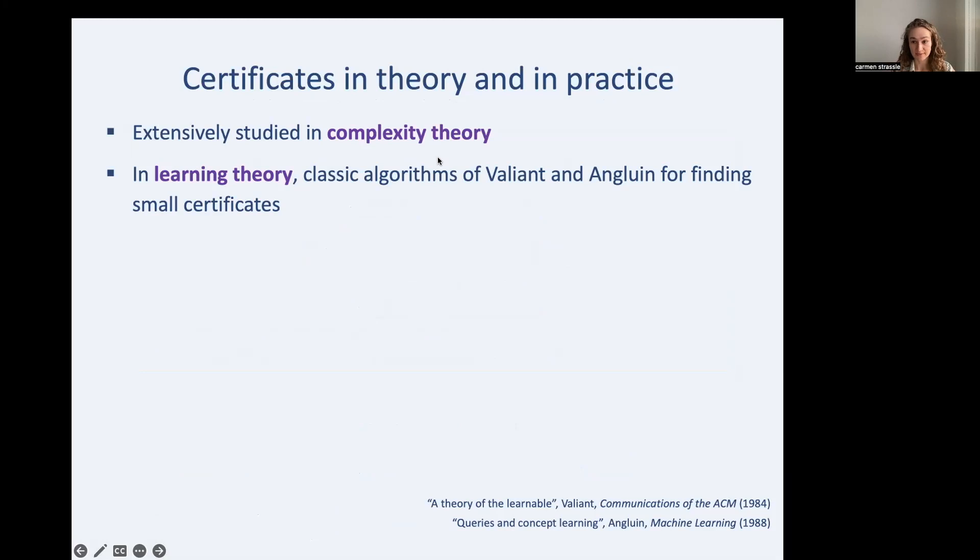So some background on this problem. Certificate complexity is extensively studied in complexity theory, as it's a highly natural measure of Boolean function complexity. It's studied in learning theory, and there are classic algorithms for finding small certificates for a restricted set of functions given by Valiant and Angluin. And it's also highly relevant for explainable machine learning, as I said before. Here's a small example of certification.